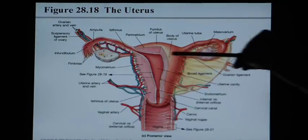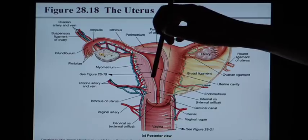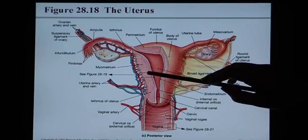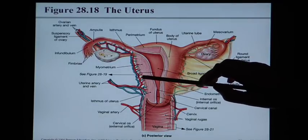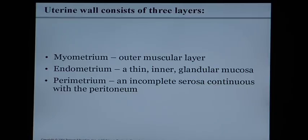A cross section through the uterine wall reveals three layers. The endometrium is the thin inner lining that changes in thickness to prepare for pregnancy and sheds during menstruation. The myometrium is the muscular middle layer — smooth muscle, since the uterus is not under conscious control. The parametrium is a serosa covering the outside of the uterus.